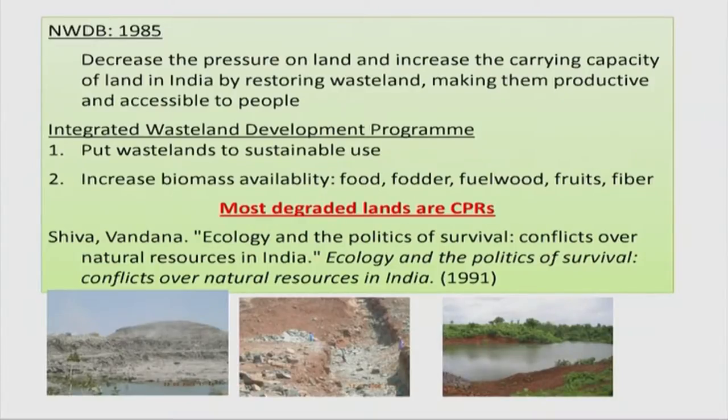The term sustainable use is very important here — it is not just to bring wasteland into use for industries or mining, but to make this wasteland useful in the long term and to increase biomass availability, especially the 5 F's they have identified: food, fodder for animals, fuel wood for cooking, fruits, and fiber. Since most of the degraded lands and wastelands are common pool resources, there has been a lot of interest from researchers because this constitutes a huge chunk of land that can be restored ecologically and provide a huge source of income and livelihood to more than 300 million people living below the poverty line in India.